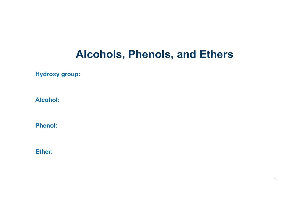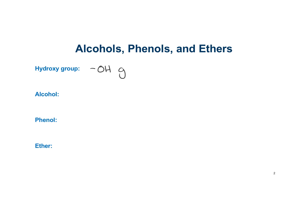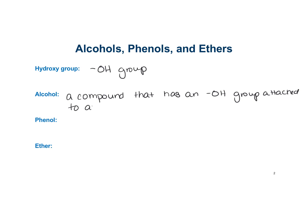When we refer to a hydroxyl group, that is just an OH group - that functional group on a molecule. An alcohol is just a compound that has an OH group attached to an aliphatic carbon atom. Remember, aliphatic just means anything besides a benzene ring. It has a general formula of ROH, where R just means the rest of the molecule.